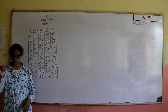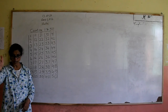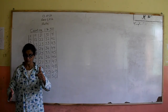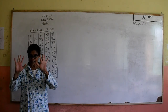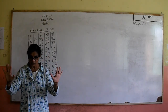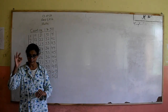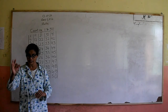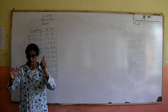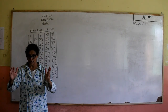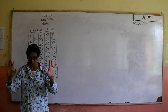One little, two little, three little friends. Four little, five little, six little friends. Seven little, eight little, nine little friends. Ten little friends we are. One little, two little, three little friends. Four little, five little, six little friends. Seven little, eight little, nine little friends. Ten little friends we are.